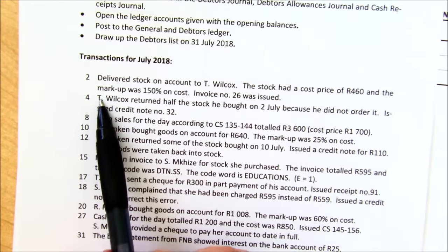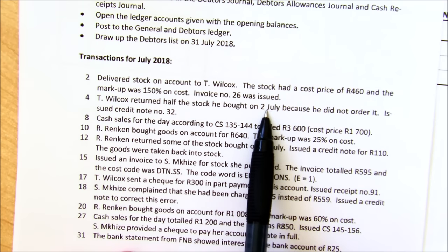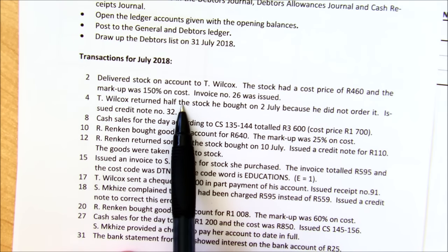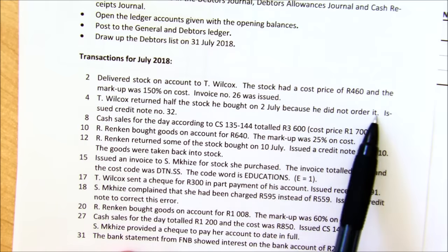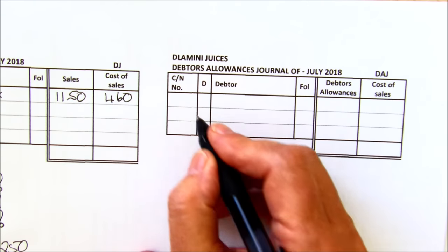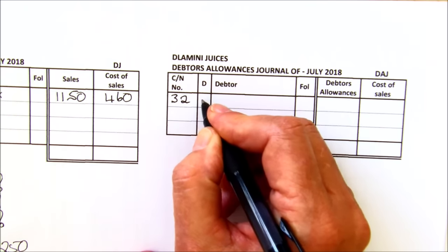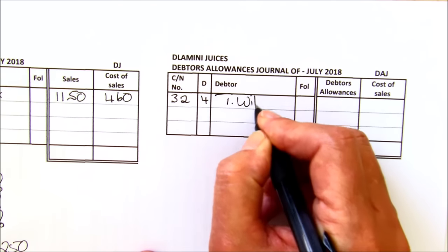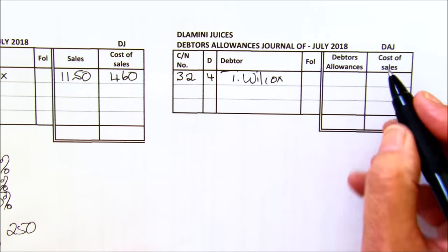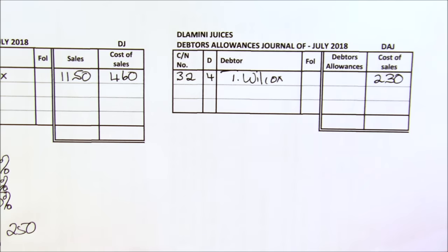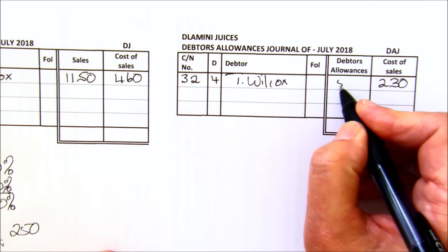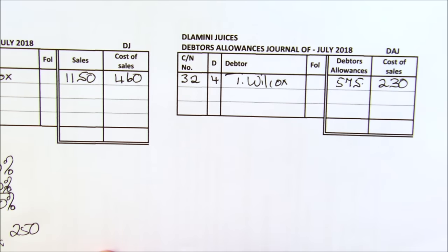On the 4th, Jay Wilcox returned half the stock he bought on the 2nd of July because he did not order it, and we issued him a credit note. He's returning to us — we sold to him on account before. So we issued him a credit note, and we are going to summarise that into our debtors allowances journal. It's credit note number 32. He's returning this on the 4th, and it's T. Wilcox. It's half — so the original cost was 460, half of it the cost will be 230. And the selling price will be half of 1150, so that's 575.